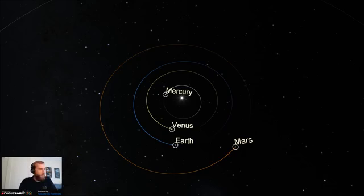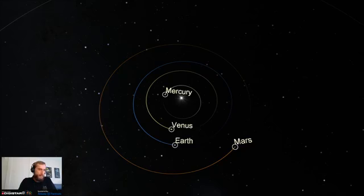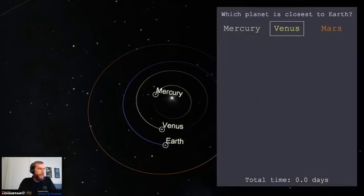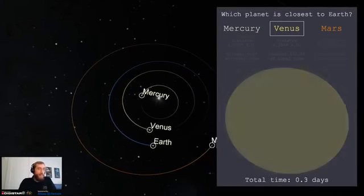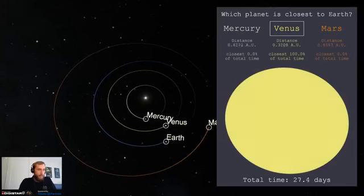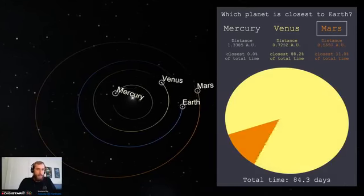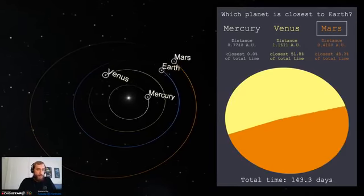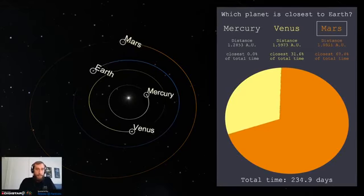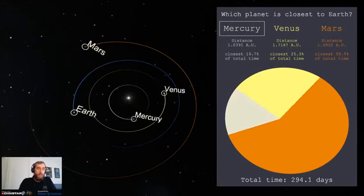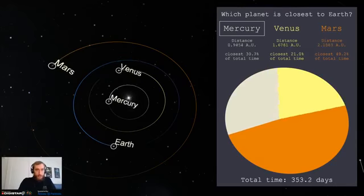Well, we can use a little bit of Digistar magic here to help us figure that out. I've got labels on all the planets to help you keep track of them. And then I'm just going to speed up time. On the right-hand side of the screen, I've added a little bit of extra information for you.